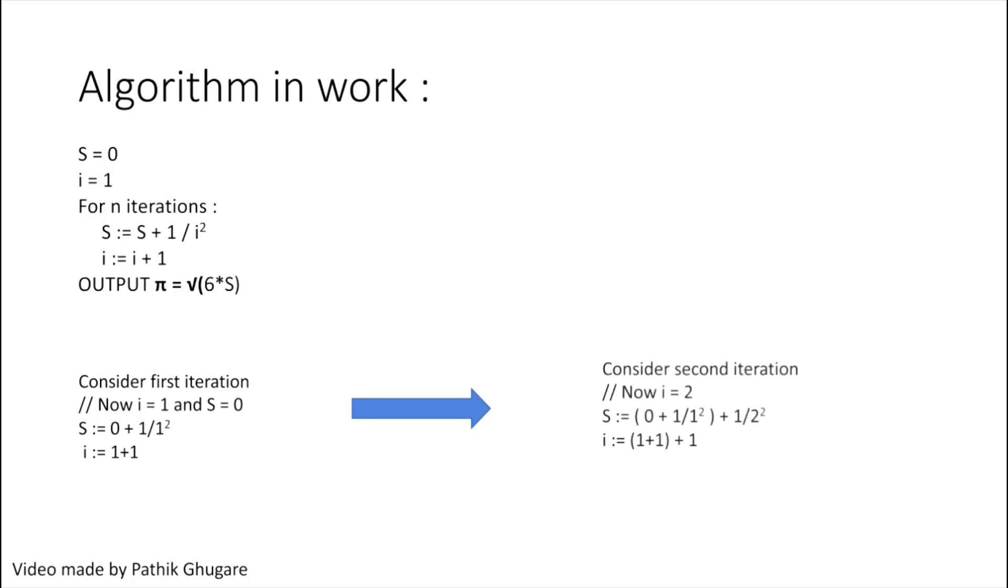Now consider the second iteration. In the second iteration, i equals two. Since in the previous iteration S is equal to zero plus 1/1², and now i equals two, we will add 1/2² and zero plus 1/1². That is, we are assigning S to be zero plus 1/1² plus 1/2².